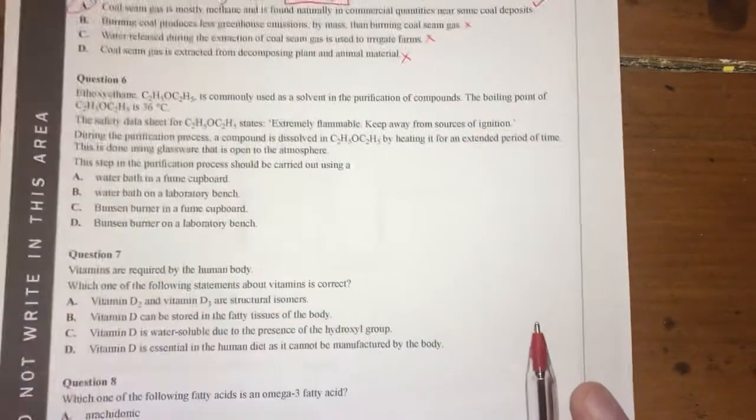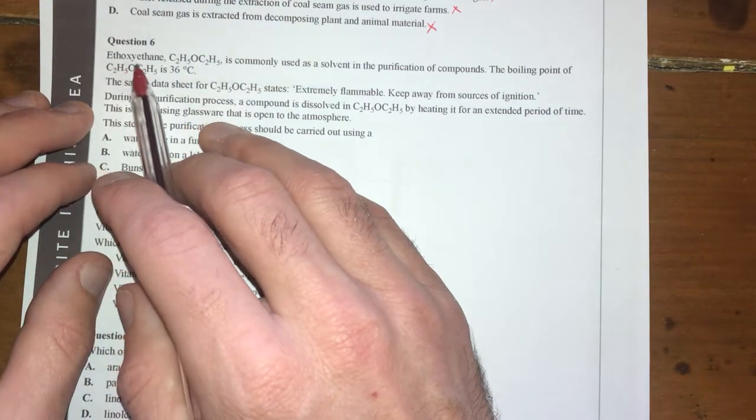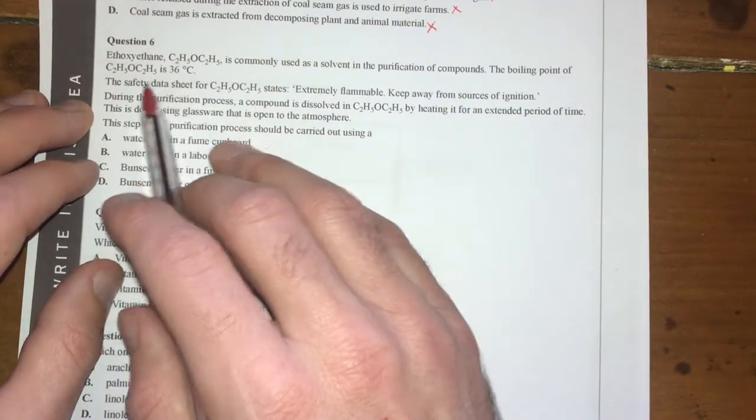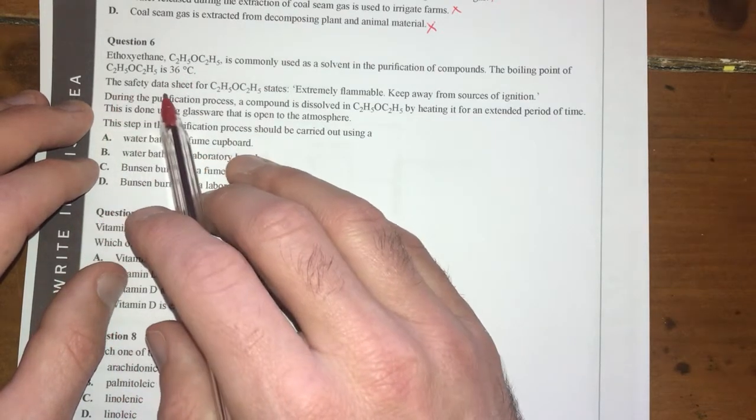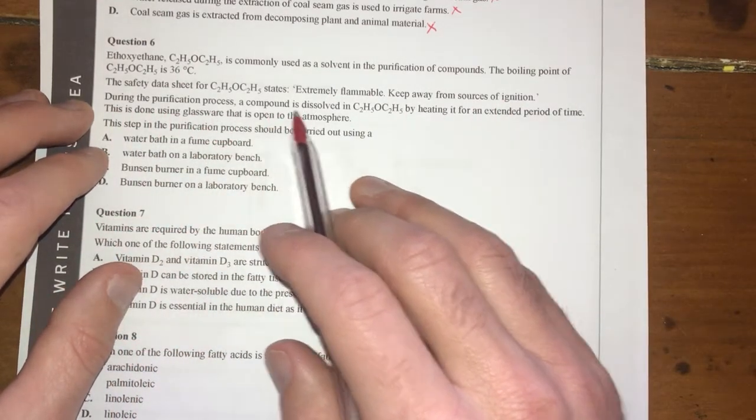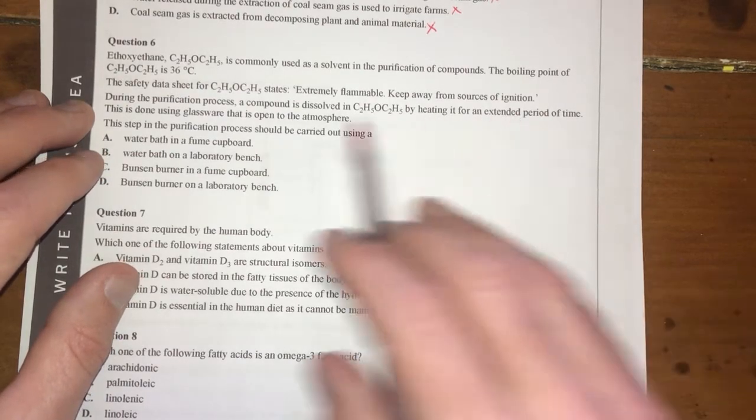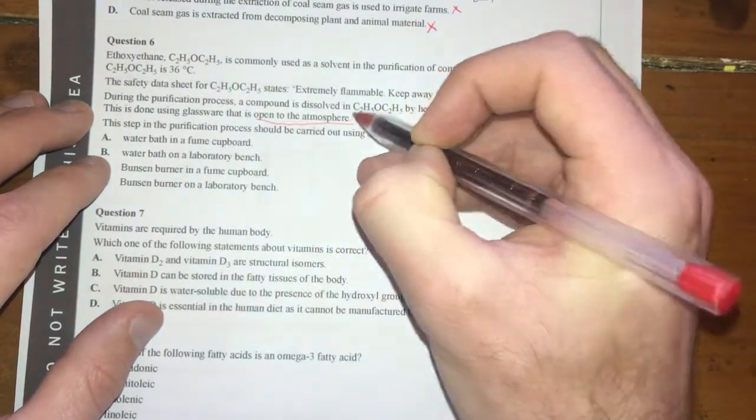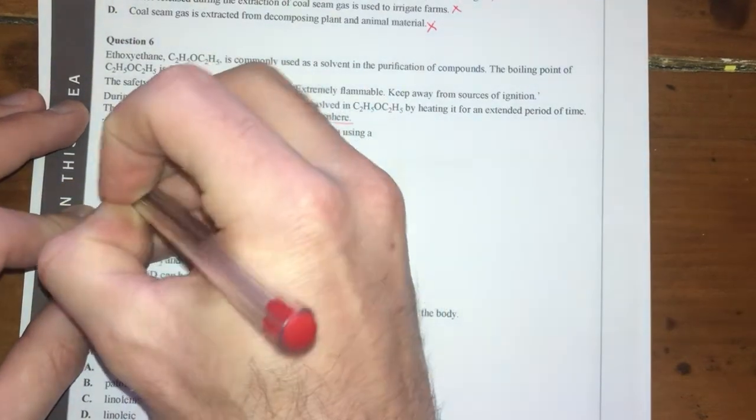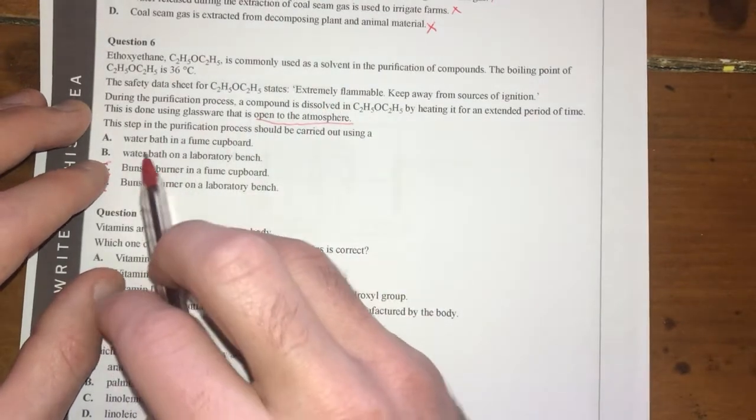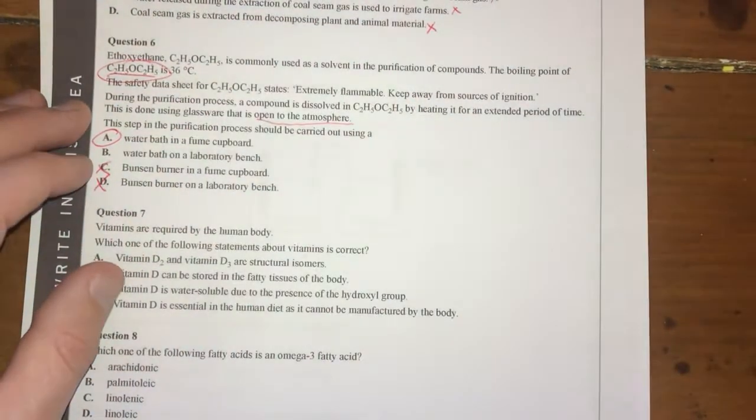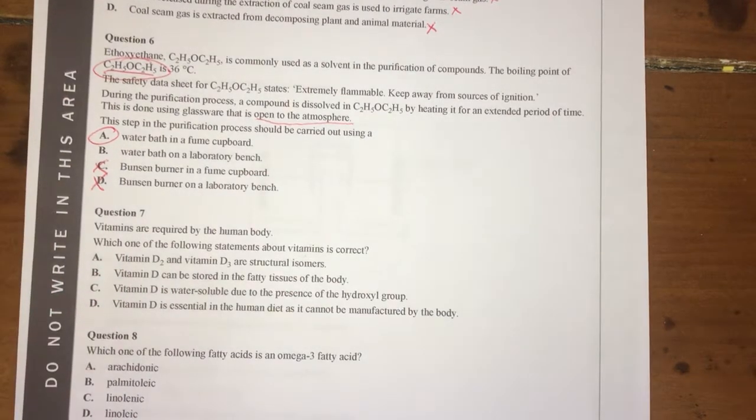Ethoxyethane is a commonly used solvent in purification of compounds. Boiling point is 36 degrees Celsius, just above room temperature. The material safety data sheet states it's extremely flammable, keep away from ignition sources. During purification, the compound is dissolved by heating for an extended period using glassware open to the atmosphere, so it can evaporate. This step should be carried out using what? Water bath or Bunsen burner—definitely not Bunsen burner because it's extremely flammable. Fume cupboard or laboratory bench—we're using an organic solvent, so fume cupboard is very important. Organic solvents are nasty things.